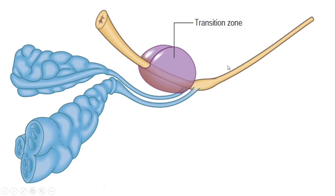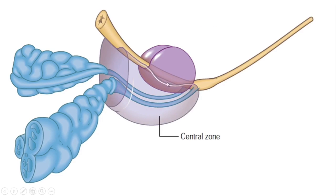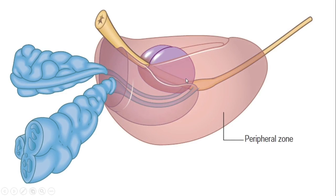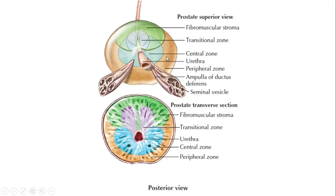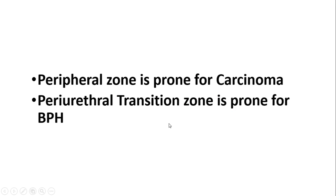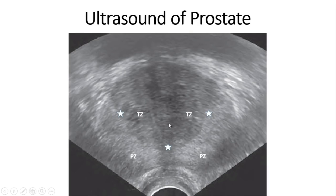Now let us talk about the McNeal zones of the prostate. These diagrams are taken from Gray's Anatomy. The innermost part of the prostate, about 5% by volume, is the periurethral transition zone. Outside this lies the central zone, just posterior to the periurethral transition zone — the central zone surrounds the ejaculatory duct and covers the prostatic urethra posteriorly. Outside the central zone, occupying 70% by volume, is the peripheral zone, covering almost all parts of the urethra except where the anterior fibromuscular stroma lies. In transverse section, the green area is the anterior fibromuscular stroma, blue is the central zone, and the brown area is the peripheral zone. The peripheral zone is prone to carcinoma, and the periurethral transition zone is prone to BPH.